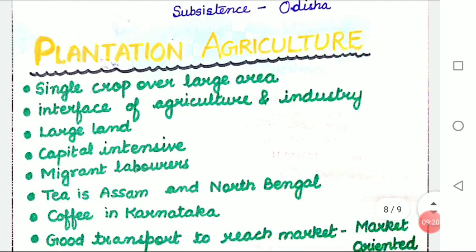Now let us talk about plantation agriculture. What is plantation agriculture and what are its features? Plantation farming is practiced in hot and humid regions of tropical and subtropical areas of the world. These areas are suited for growth of special types of crops which have great demand in the international market. Plantation farming specializes in large-scale production and processing of a single crop for the purpose of export, and thus it is a form of commercial farming.